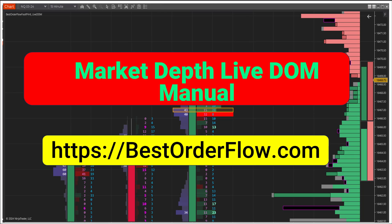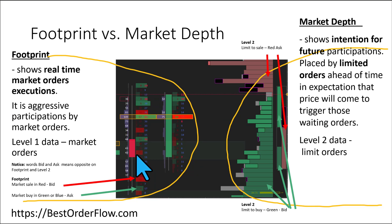This is a manual for market depth live DOM from BestOrderFlow.com. The orders on the footprint that we can see here are aggressive market executions. These are aggressive participants using market orders, level one data we see in real time.